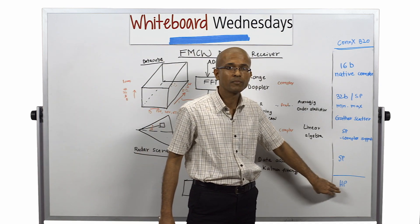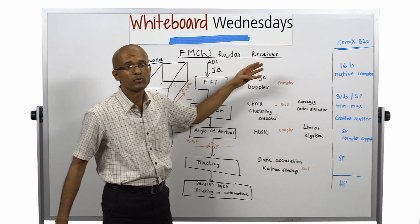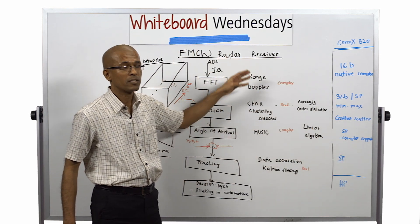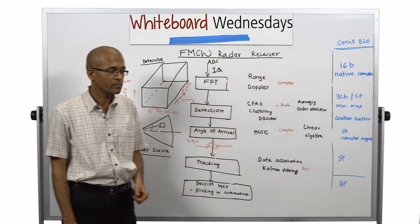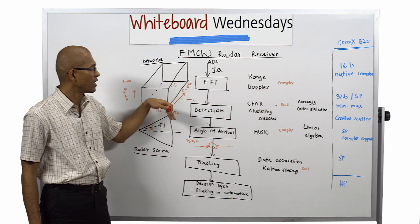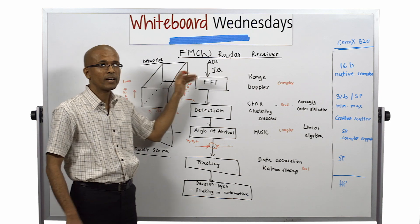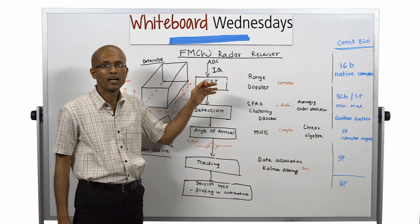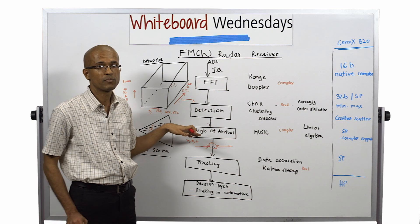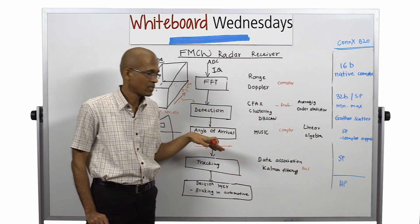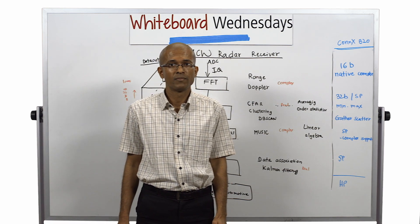The B20 DSP also has half-precision data processing, which can be used in some parts of the signal processing data path. This gives a brief overview of the FMCW radar receiver and the different features of Connex B20 that are used for this processing. Thank you for watching this Whiteboard Wednesday — see you next time.